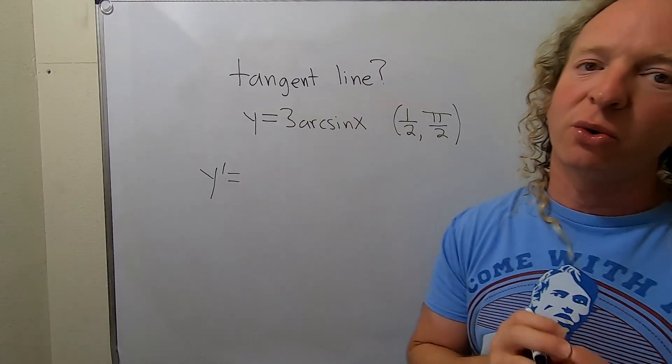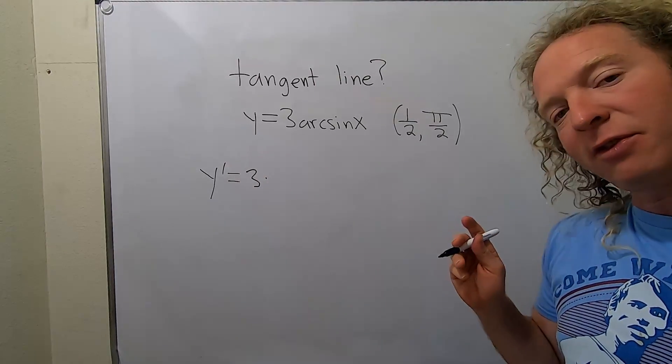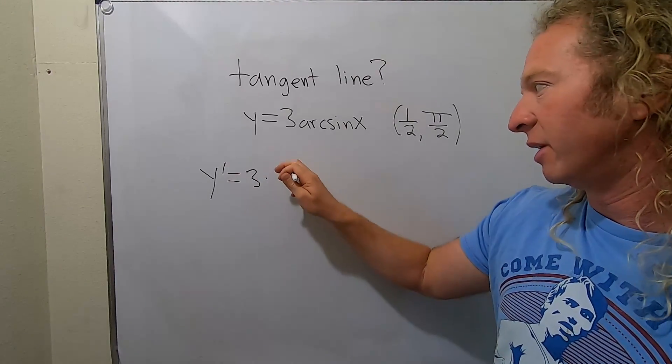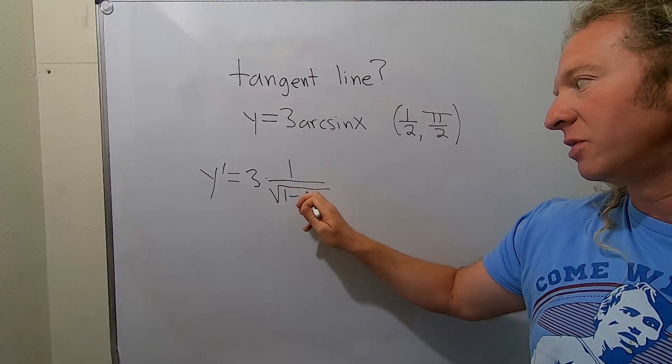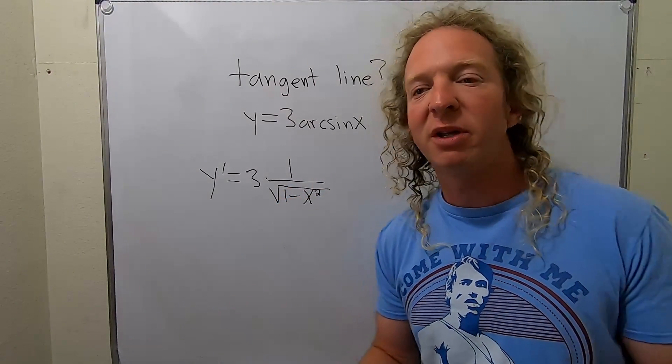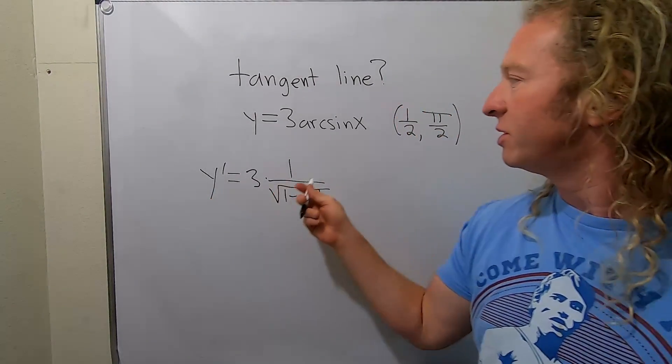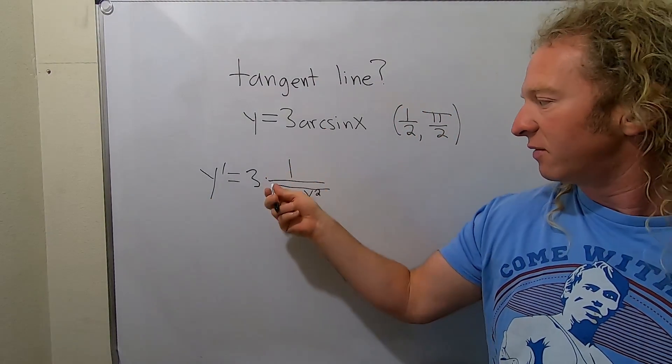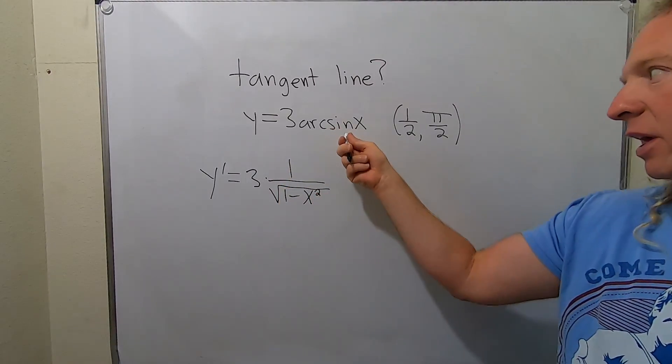Three is a constant so it just hangs out. So we have three times the derivative of arc sine, which is a formula: one over the square root of one minus x squared. This is one of the formulas that is worth memorizing, totally worth knowing. So this is the derivative of this function. This gives us the slope at any x value that we plug in.